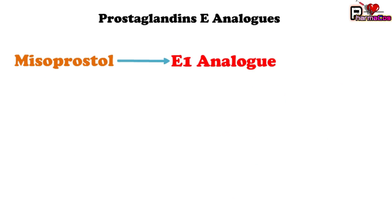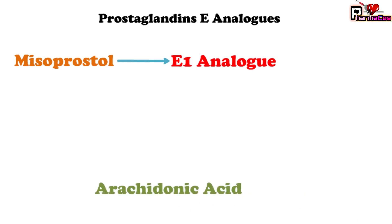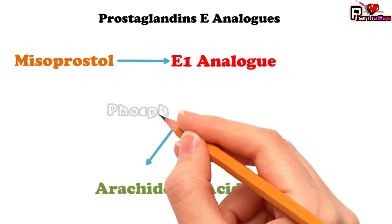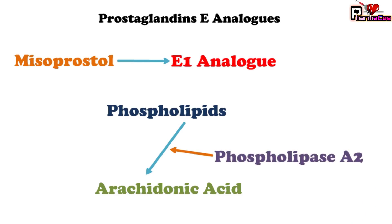Arachidonic acid is a C20 fatty acid and the primary precursor of prostaglandins and related compounds. It is present in cell membranes. Free arachidonic acid is derived and released from tissue phospholipids by the action of phospholipase A2, through a process controlled by hormones and other stimuli. Arachidonic acid is responsible for the generation of many types of mediators.